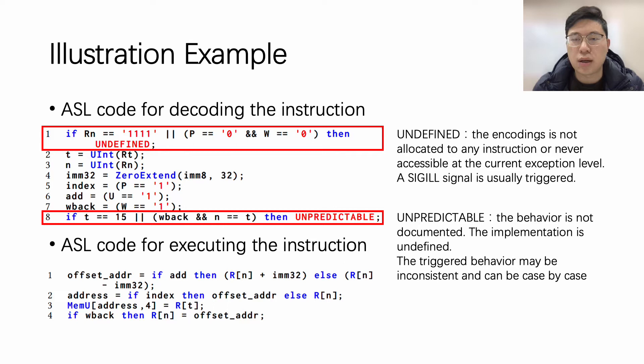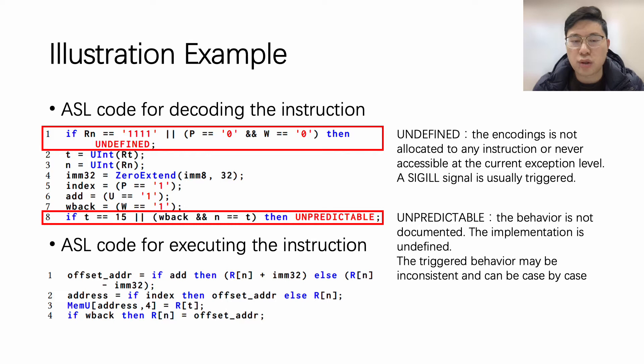For example, in line 1, the symbols RN, P, and W will be checked. If the condition is satisfied, the instruction stream is undefined. Undefined means that the encoding is not allocated to any instruction, or it is not acceptable at the current exception level. In this case, a SIGILL signal is usually triggered by the operating system. In line 8, the symbols T, W-back, and N will be checked. If the condition is satisfied, the instruction stream is unpredictable. Unpredictable means that the implementation is undefined; the triggered behavior may be inconsistent and can be case-by-case.